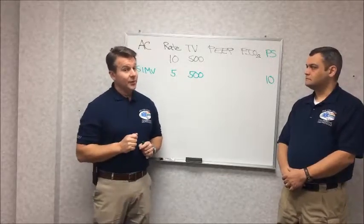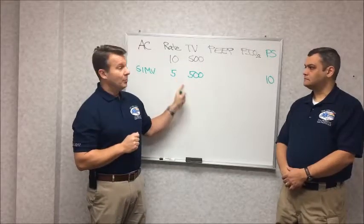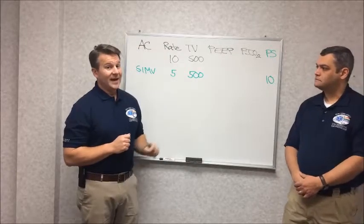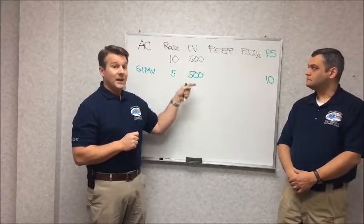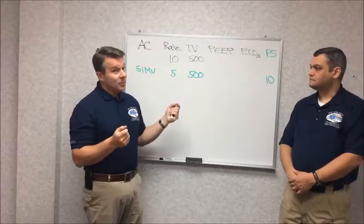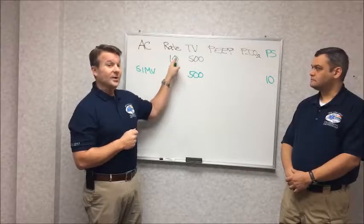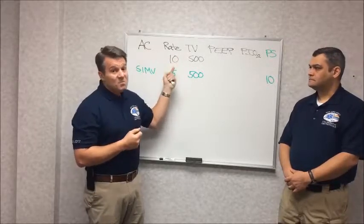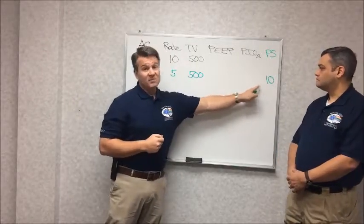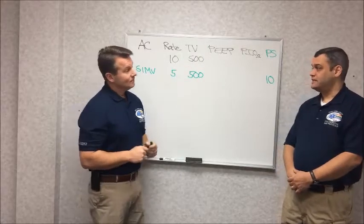If your end tidal CO2 starts creeping up, that's telling you that the obligate minute ventilation plus what the patient is doing on their own is insufficient. That's when you should be thinking: maybe I should flip this patient over to assist control, or more simply, just turn up the rate on SIMV because you can get there. And if you meet their need functionally — if you're on SIMV and the patient doesn't take any spontaneous breaths — you're kind of on assist control anyway.